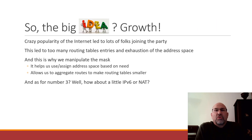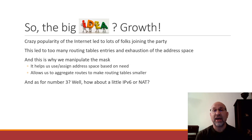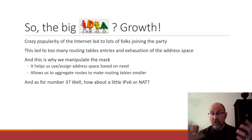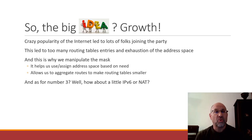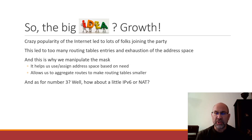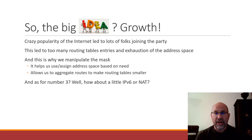So what's the big idea? It's growth — the crazy popularity of the internet led to lots of folks joining the party: networks, individuals, businesses, government entities — everybody wanted to be connected. All of this public address space was being consumed, and routers had to be able to forward to all of these destinations. That's why we manipulate the mask: it helps us use and assign address space based on need. The ISPs control that, and it also allows us to aggregate routes to make routing tables smaller. You can collapse a very large number of routes to a very small number by using aggregation via manipulation of the mask.